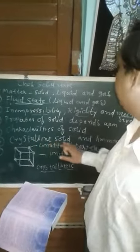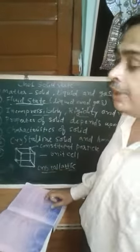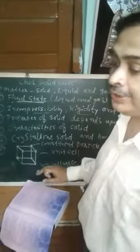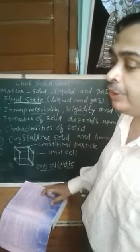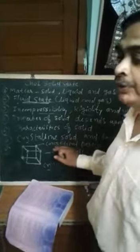But in case of amorphous solid, the atoms, molecules or ions are not arranged in a definite pattern. They have no definite shape, no geometrical shape. Amorphous means shapeless. This is known as amorphous solid.